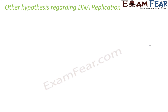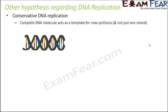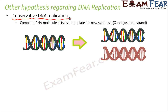This was not the only hypothesis proposed at the time. There were others regarding DNA replication. One of them was conservative DNA replication, which said that the complete DNA molecule acts as a template for new synthesis. As per this model, the two strands do not separate; the DNA remains intact and the entire DNA molecule itself acts as the original copy, from which a new DNA molecule gets synthesized. So from one DNA molecule you directly get two DNA molecules.